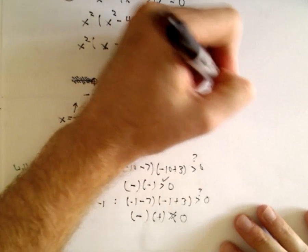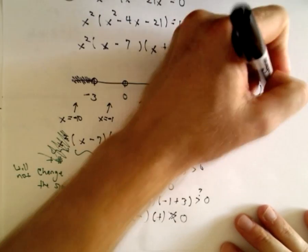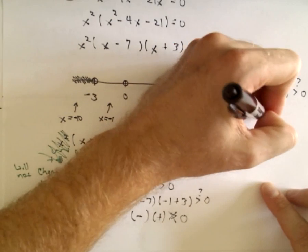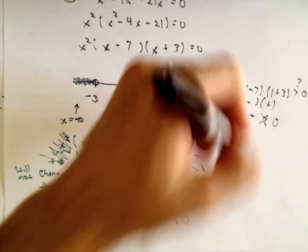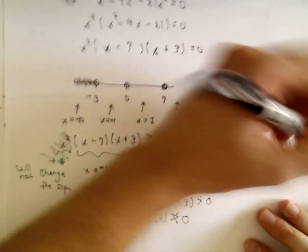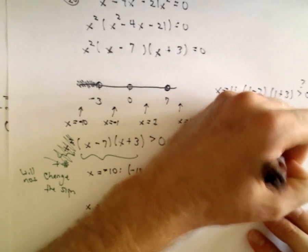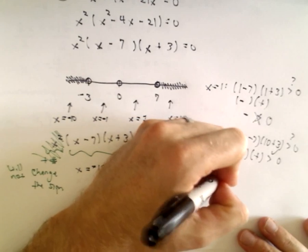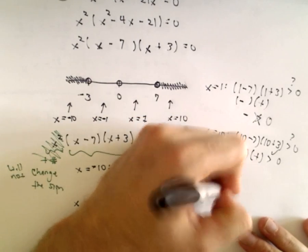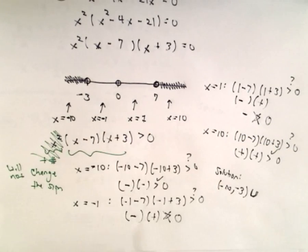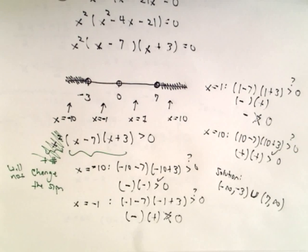For x equals positive 10: 10 minus 7 is positive, 10 plus 3 is positive — positive times positive is greater than zero, so that works. So the solution set will be from negative infinity up to negative 3 — using parentheses because negative 3 is not included — union with 7 to infinity. That would be our solution set.